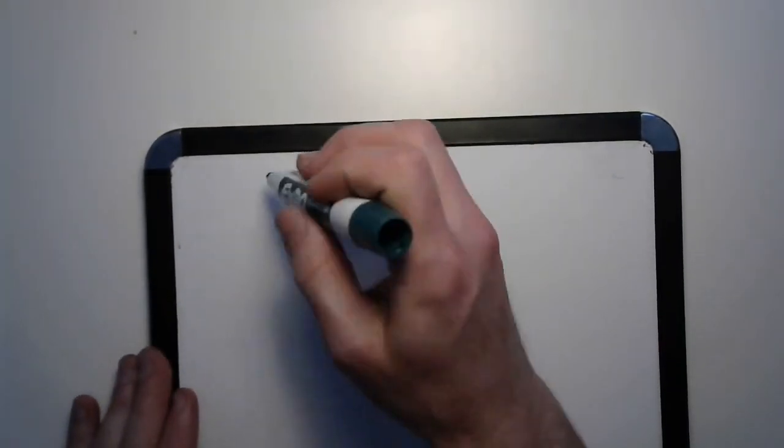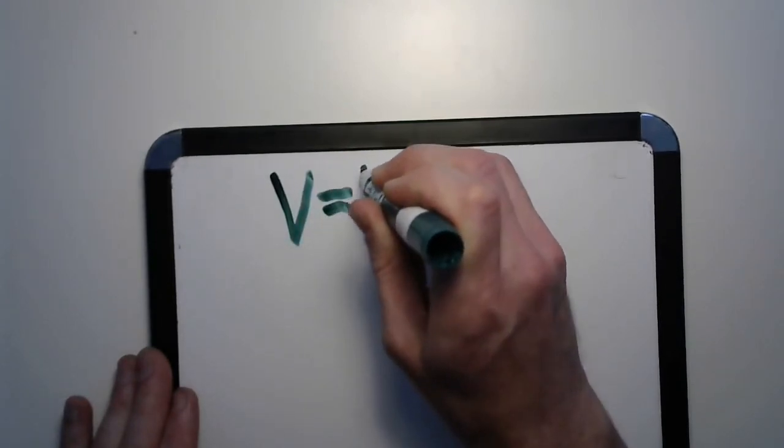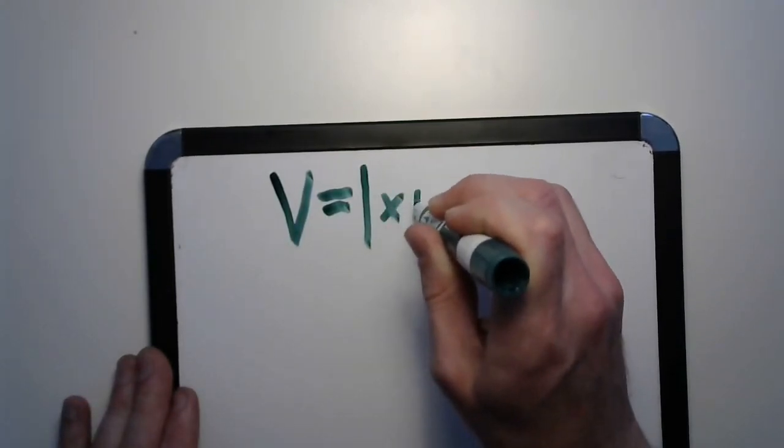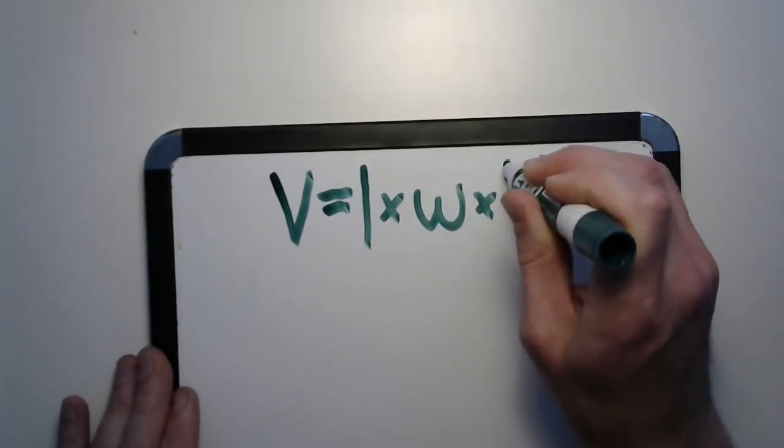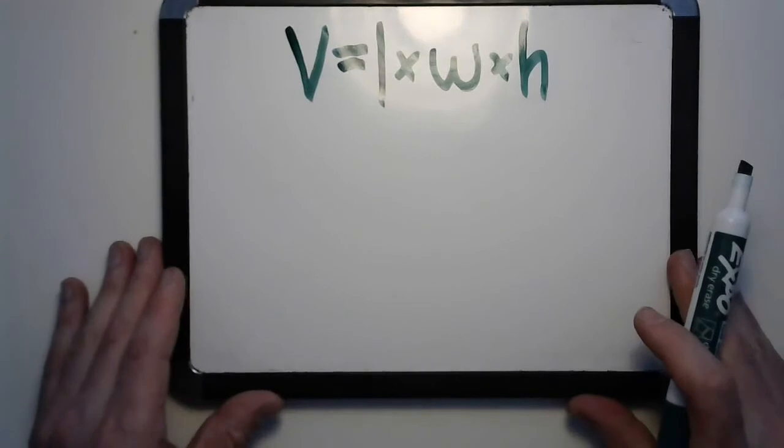That means we can go back to that plant food now and figure out what exactly is going on in there. Volume equals length times width times height. All right, well let's get a ruler and let's measure.